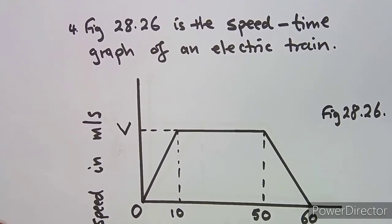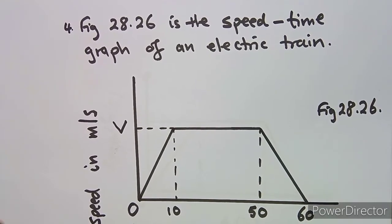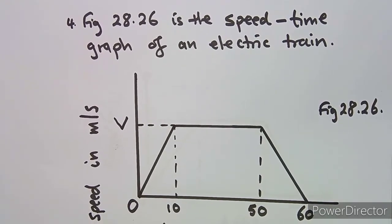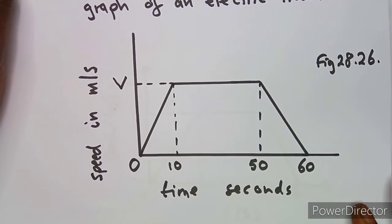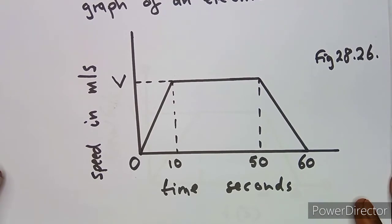I shall quickly work through the problem I was given. I'm going to display it — I think this was taken from one of the textbooks, it was number four. We are given Fig 28.26, which is the speed-time graph of an electric train. So this is the velocity-time graph that we're given.